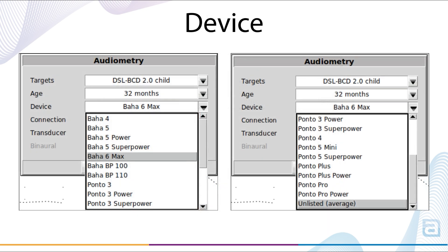Device sets the bone conduction device that the patient is fit with. Select various BAHD and PONTO hearing devices to set DSL-BCD 2.0 prescriptive targets based on the device's amplification characteristics, or select the newly added unlisted average option for instances where a device is not on the list or average device transforms are required.